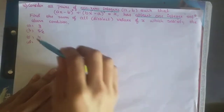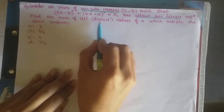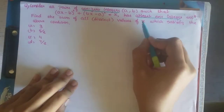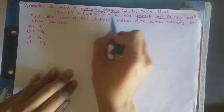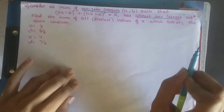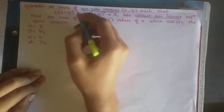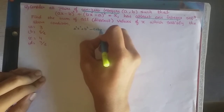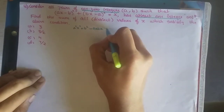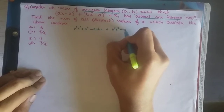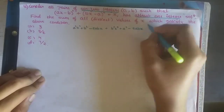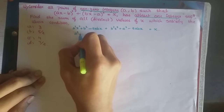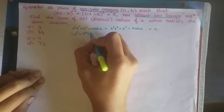They are asking us to find the sum of all distinct values of x which satisfy the above condition — essentially the sum of roots of this equation. So let's see how to do this. If I expand, I get a²x² + b² − 2abx + b²x² + a² − 2abx = x.